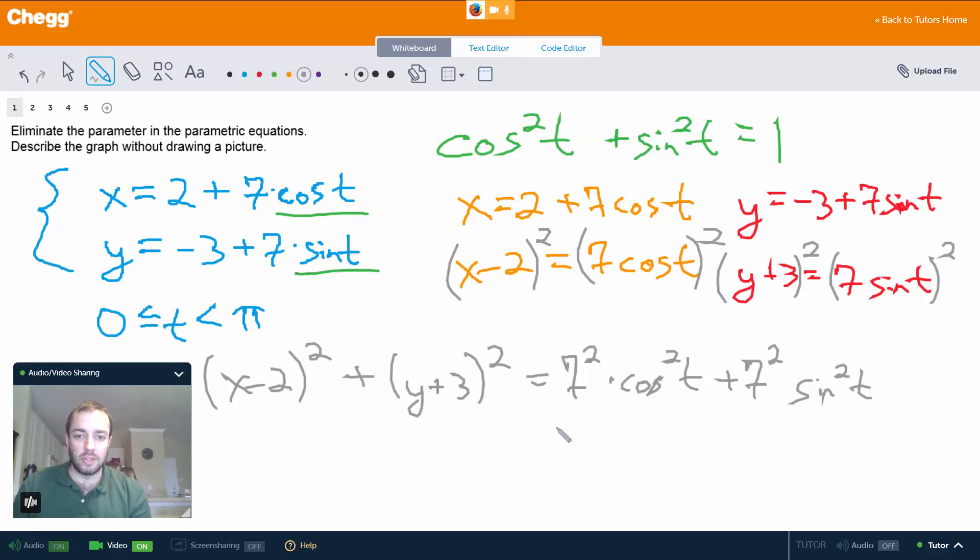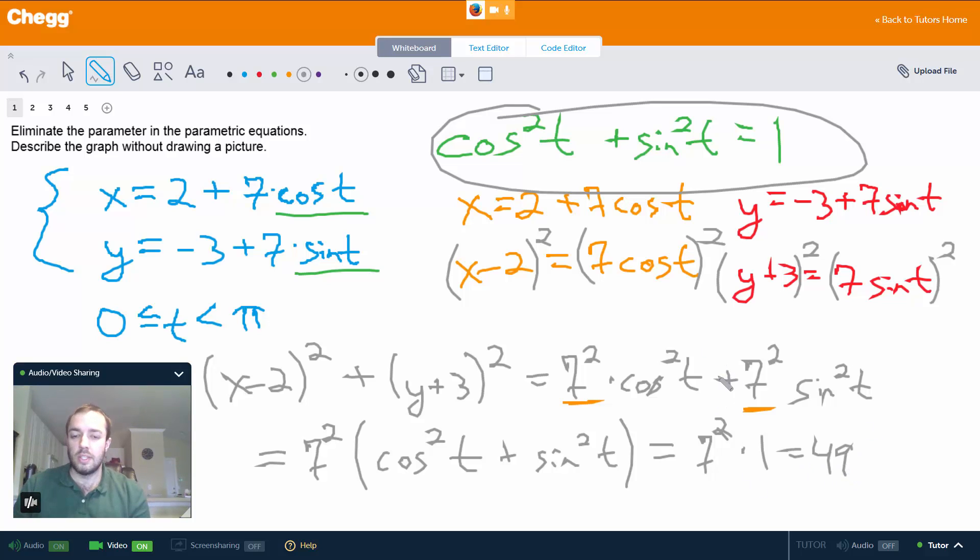Now how do we simplify further? Well notice we have a common factor of 7² that we can pull out here. So if we pull that out we're going to have 7² times the quantity (cos²t + sin²t). And what's that? Well hey, that's just a 1, right? Cos²t + sin²t is just 1. So this whole thing is 7² times 1, which just simplifies to 49.